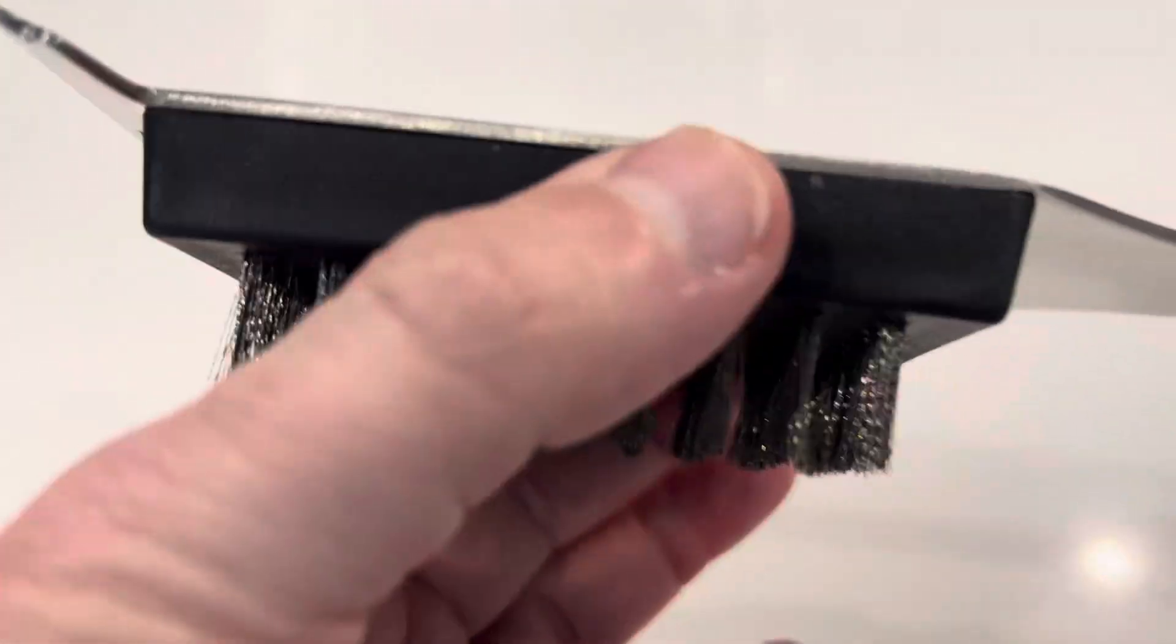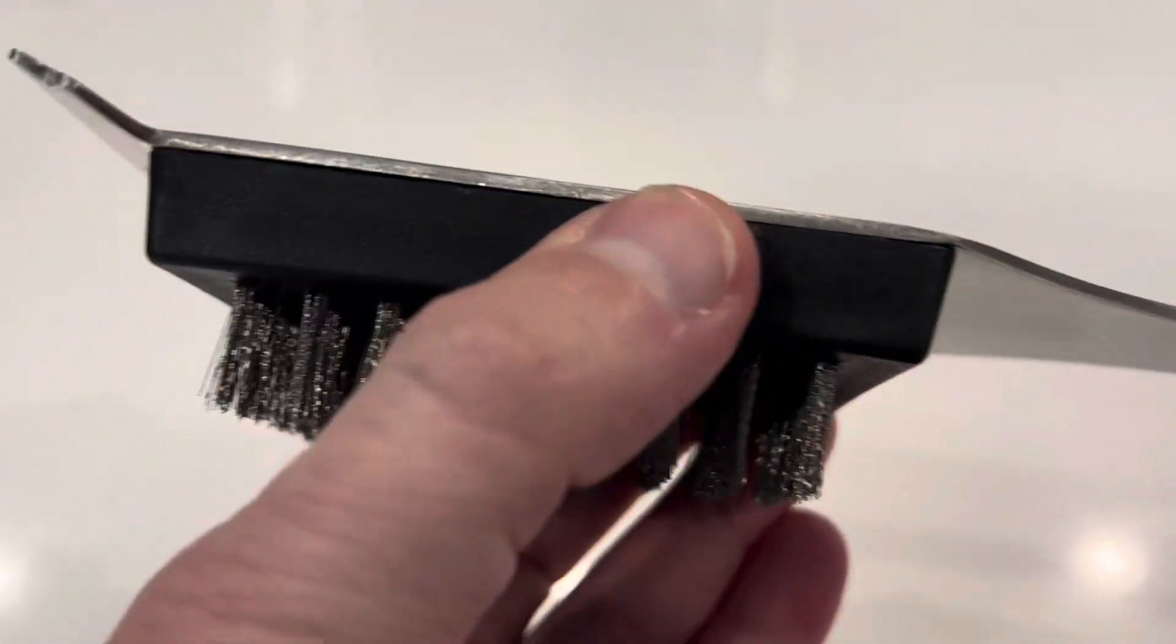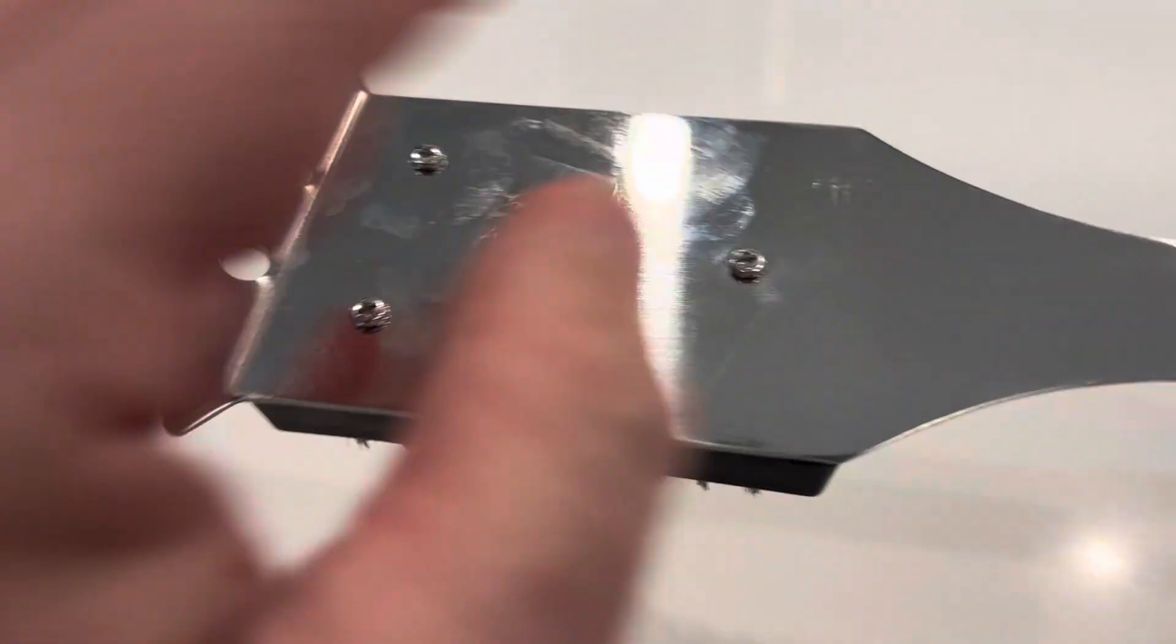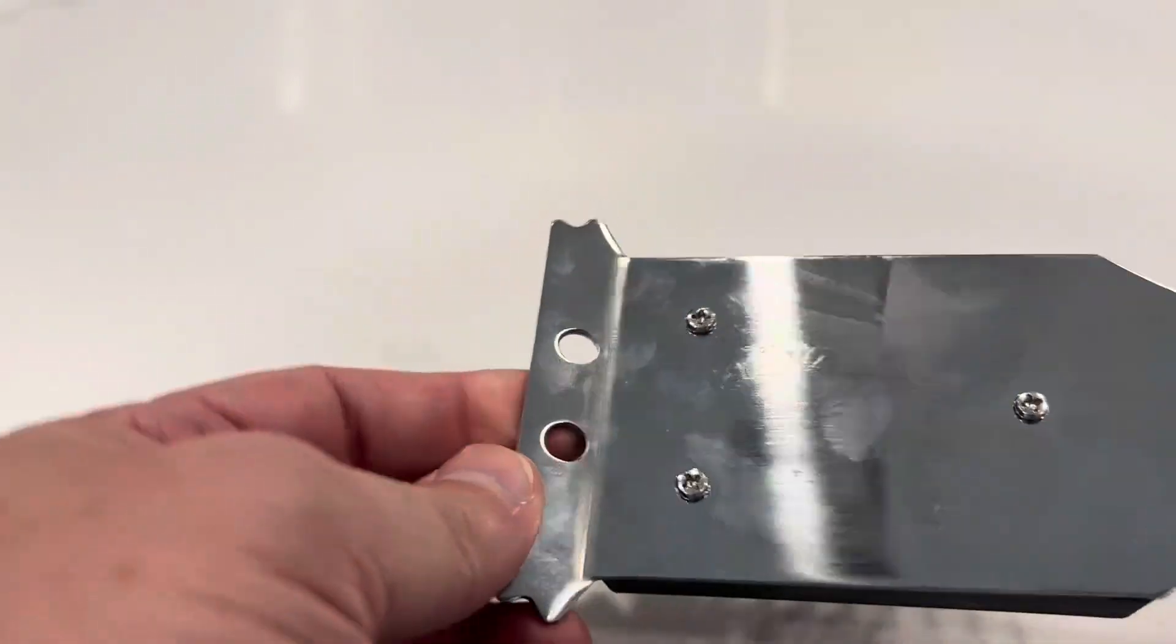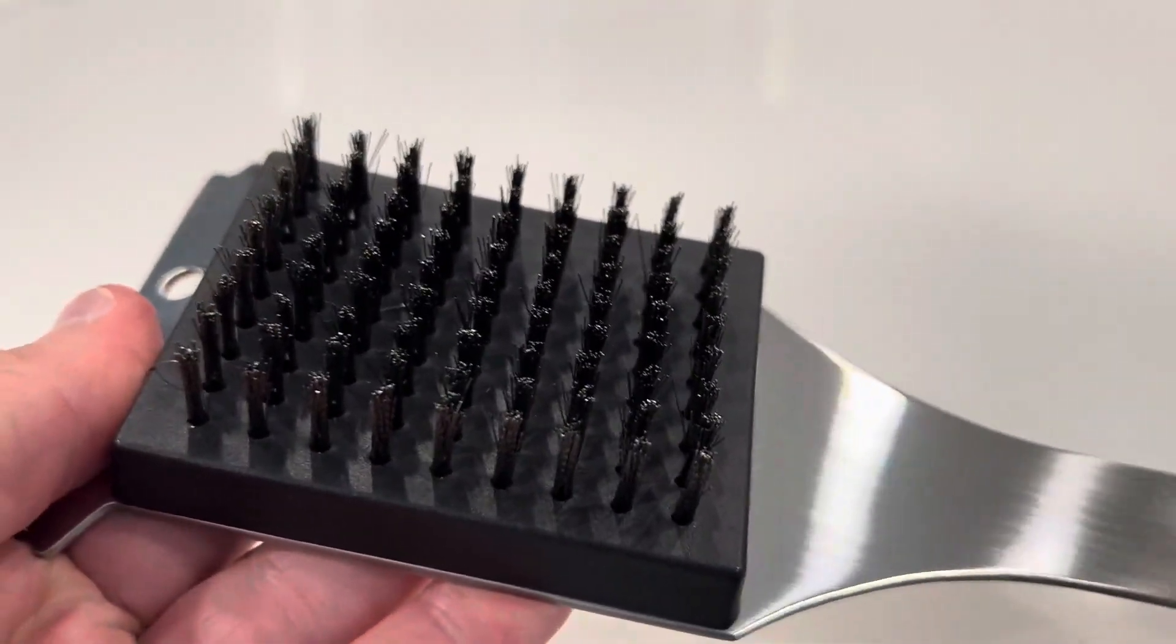You've got this solid block right here. I'm not sure what that is, but it's very solid. The rest of it is stainless steel. So this thing is totally solid. It's not flimsy at all, and this is a good brush to use when you're cleaning your grill.